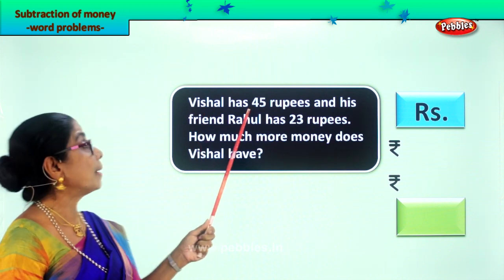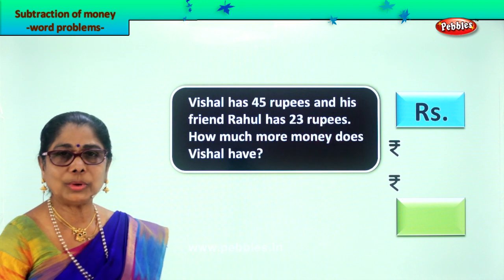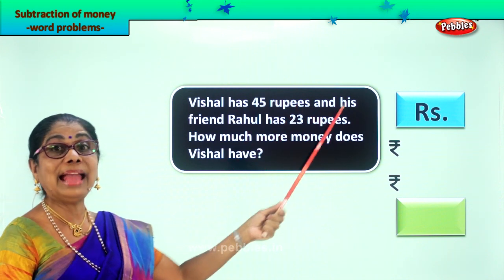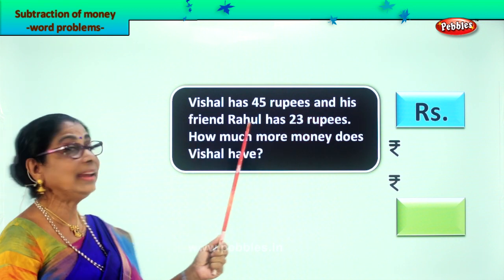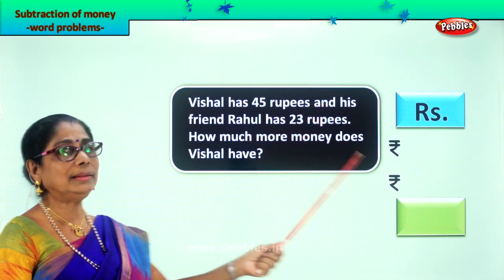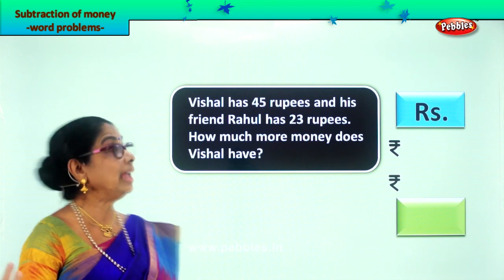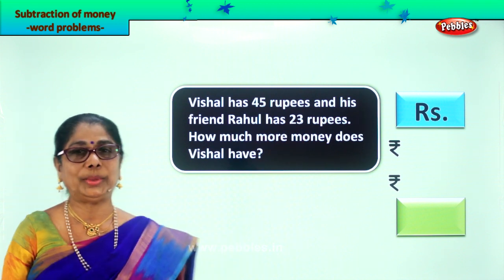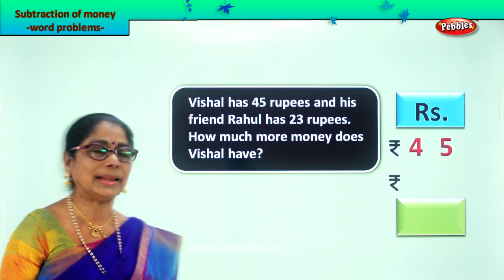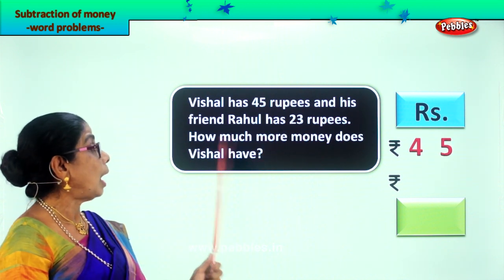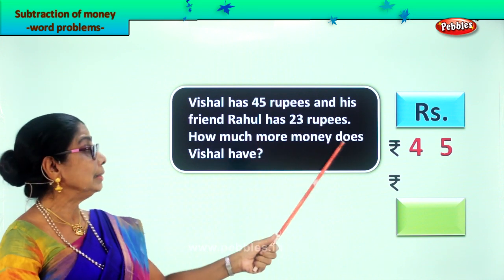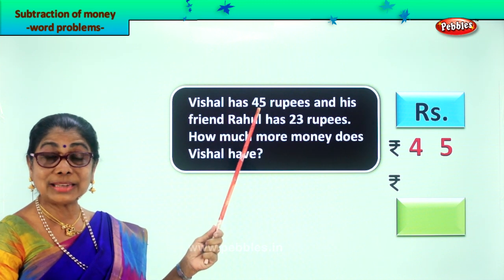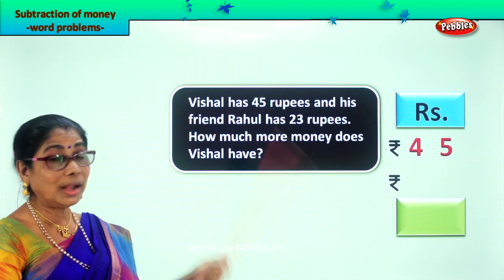Bishal has 45 rupees. And his friend Rahul has 23 rupees. Bishal has 45 rupees and his friend Rahul has 23 rupees. How much more money does Bishal have? Now we'll have to work out the sum.